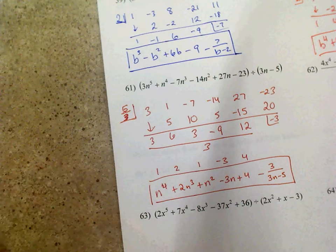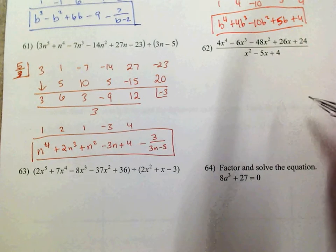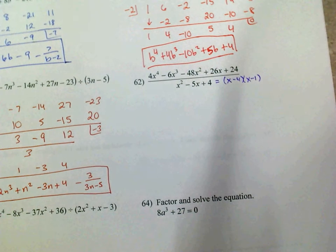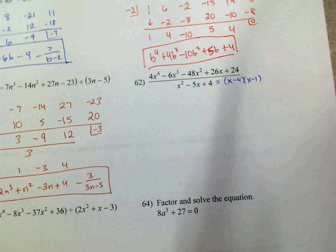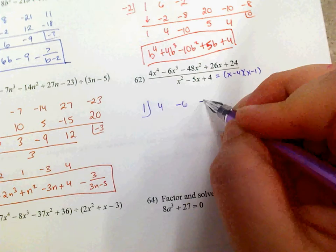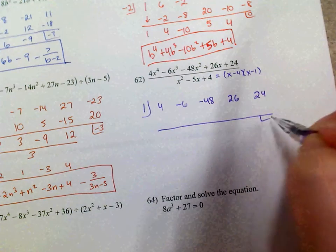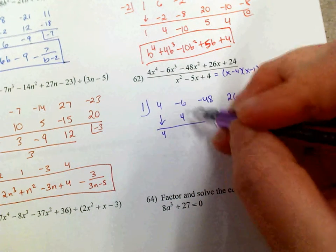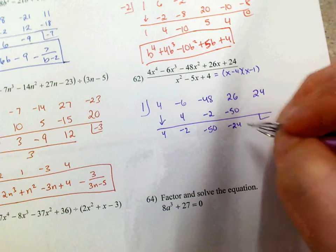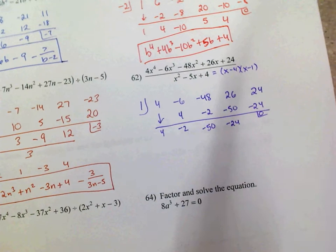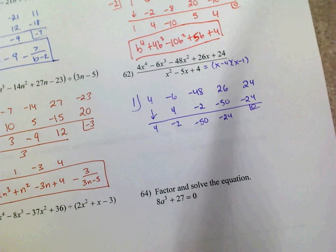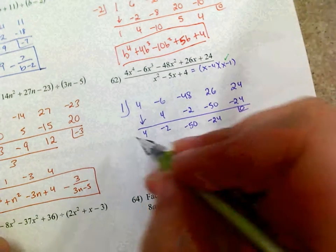Number 62. We're dividing by a quadratic, which means we're dividing by two different binomials: x minus 4 and x minus 1. It's up to you which one to do first — it really doesn't matter. I'm going to do x minus 1 first, putting 1 in the half box. Coefficients are 4, negative 6, 4, 3, 2, 1 — wait, negative 48, 26, and 24. Drop the 4. 1 times 4 is 4; add, get negative 2. 1 times negative 2 is negative 2; add, get negative 50. 1 times negative 50; plus 26 is negative 24. 1 times negative 24 is negative 24, remainder 0. If you do not get a remainder of 0, you cannot keep going. So we divided out x minus 1; now divide out x minus 4, putting positive 4 in the half box.